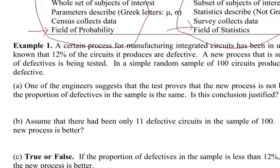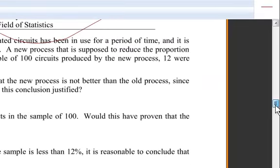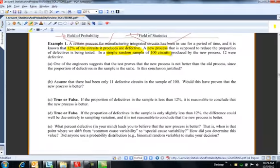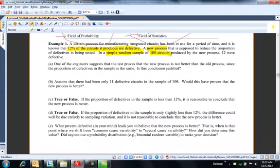So, I just have a little example here. A certain process for making integrated circuits has been in use for a long time. It is known that 12% of circuits it produces are defective. That's not so good. So they're inventing some kind of new process to see how it compares to the old process. They take a simple random sample of 100 circuits. In other words, think of all these circuits, the population of all circuits sitting in this big bin, and they randomly select 100 of them. Every circuit has an equally likely chance of being in the sample. When they grabbed out 100, 12 were defective.